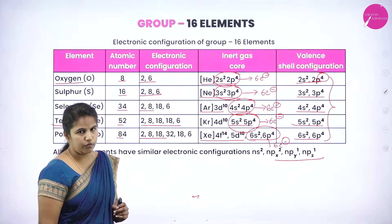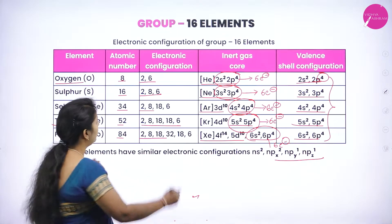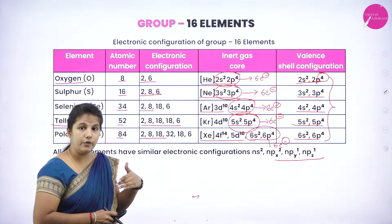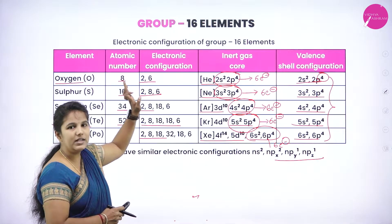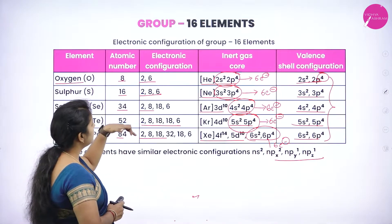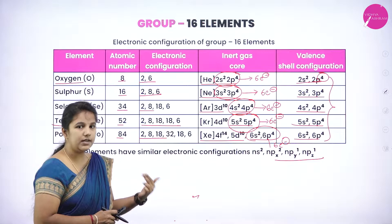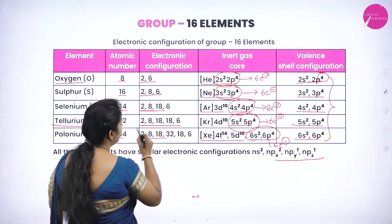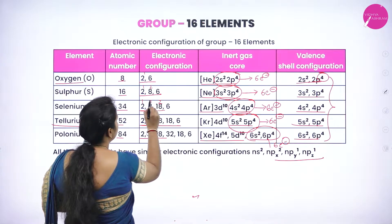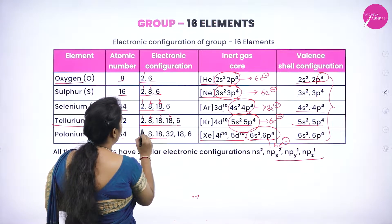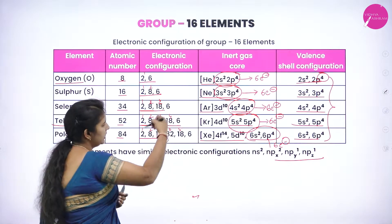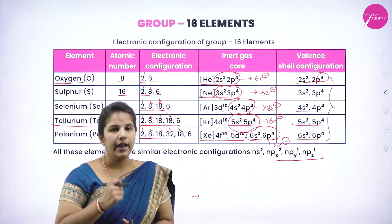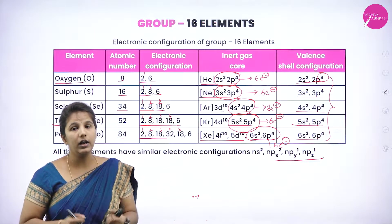As we move down the group, the number of shells increases and all inner shells are completely filled, while the valence shell consistently has 6 electrons. This is why the group is known as the Oxygen family or Chalcogen.